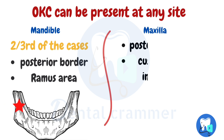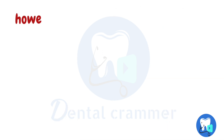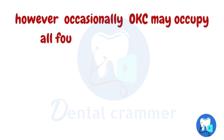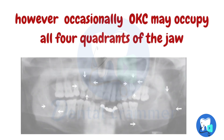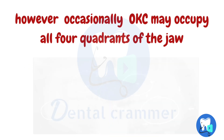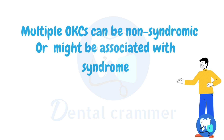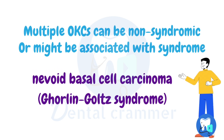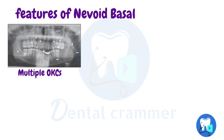In the maxilla, the most common site is the posterior segment and the cuspid lateral incisor area. Occasionally, OKC may occupy all four quadrants of the jaw. In such cases with multiple OKCs, they might be non-syndromic or might be associated with a syndrome such as naevoid basal cell carcinoma.